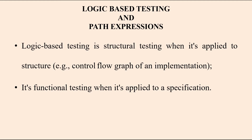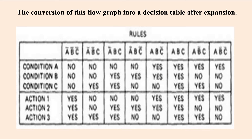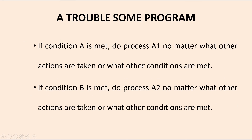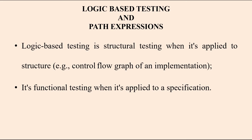For example, the control flow graph of an implementation. Let us see one example of a control flow graph. In this control flow graph we have a set of nodes and a collection of nodes within it, and a set of actions to be generated. So this control flow graph represents the particular program — what conditions are met and what actions are to be generated can all be described in logic-based testing.